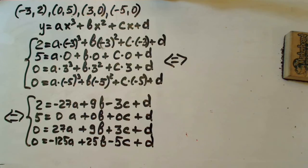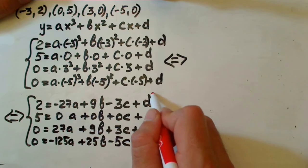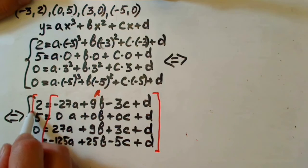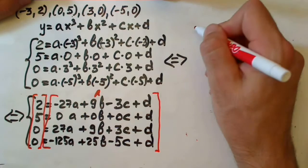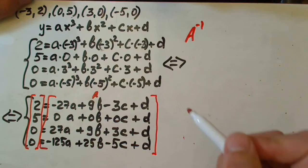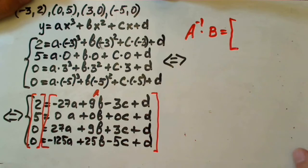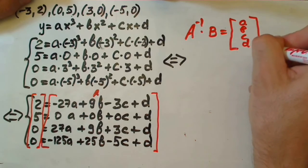Now we have our system of equations. I'm going to solve it using matrices. Matrix A will be our coefficient matrix next to our variables, and matrix B will be the constants on the other side. The inverse of matrix A times matrix B will give us the answer matrix which includes our variables a, b, c, and d.